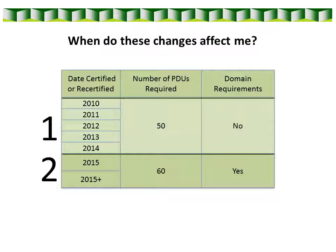If you were certified before 2015, for your current certification cycle you're not required to have PDUs from each of the three domains. You're required to have 50 PDUs and they can come from any of the domains on the exam content outline. In subsequent certification cycles, however, you'll be required to have 60 PDUs with some from each domain. For Group 2, those certified in 2015 or later, you're required to have 60 PDUs with some from each domain for your current certification cycle.